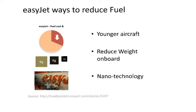Being one of the most important single costs for airlines, airlines are always looking for ways to reduce fuel and fuel cost. Here I introduce three things that EasyJet is doing to reduce fuel cost. First is to use younger aircraft. By using younger aircraft, planes tend to be more efficient because they use the newest technology and therefore use less fuel. Second is to reduce weight. If aircraft have less weight, it's going to consume less fuel and result in a reduction in fuel cost.